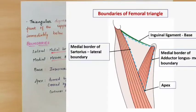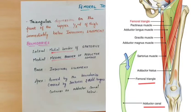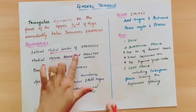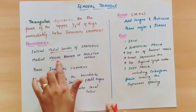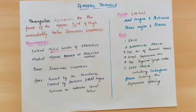The apex continues as the adductor canal. The adductor canal leads to the hiatus of adductor magnus. There are structures including blood vessels and nerves. To summarize the boundaries: lateral border is the medial border of sartorius muscle, medial border is the medial border of adductor longus, base is made by the inguinal ligament, and the apex is formed where sartorius and adductor longus cross, continuing as the adductor canal.